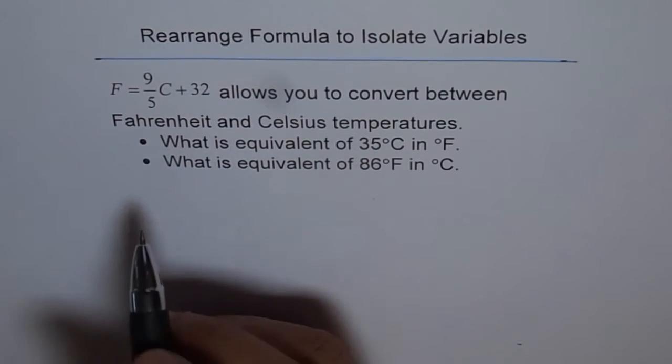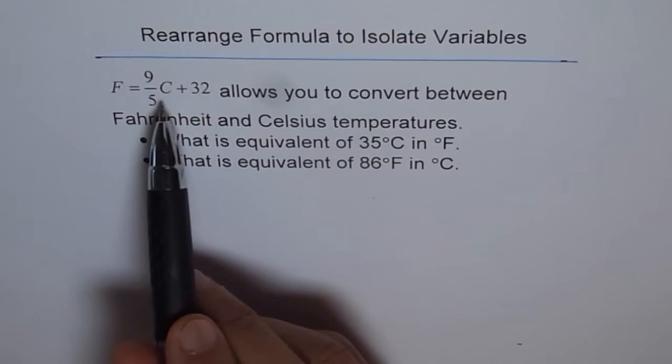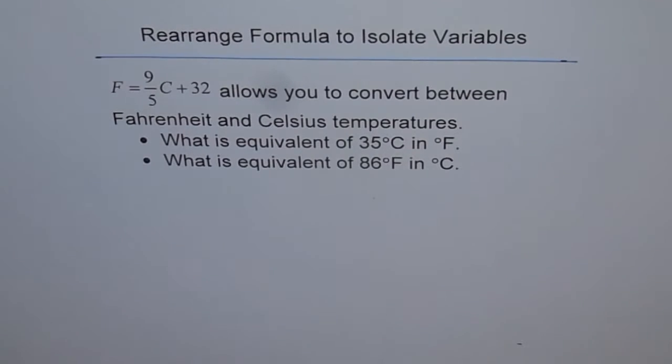Here we have a very good formula. F stands for temperature in Fahrenheit and C stands for temperature in degree centigrade. Normally in Canada, we are measuring temperature in degree centigrade and in USA, we do it in Fahrenheit.